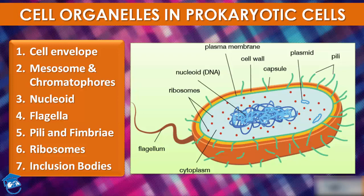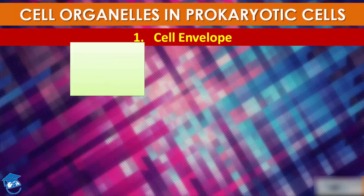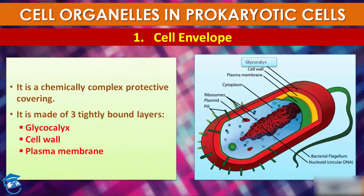First is the cell envelope. The cell envelope is a chemically complex protective covering. Most prokaryotic cells, particularly bacterial cells, have a chemically complex cell envelope. It consists of a tightly bound three-layered structure: first is glycocalyx, followed by cell wall, and then the plasma membrane. These three tightly bound layers together form the cell envelope.